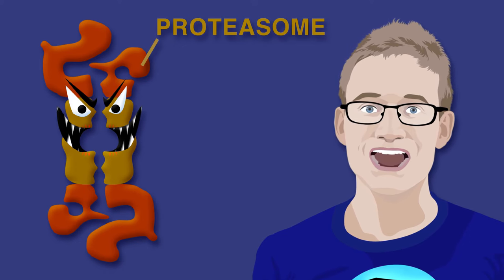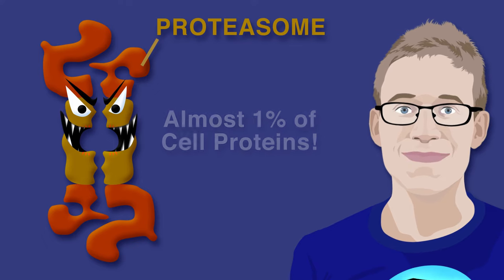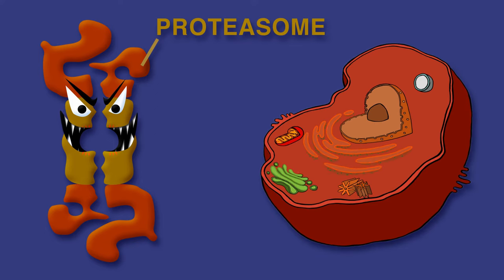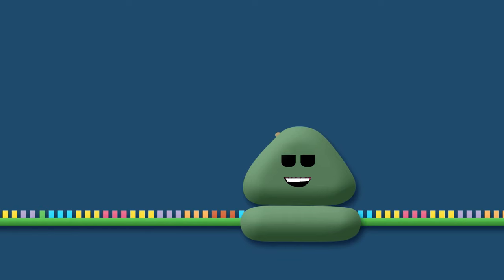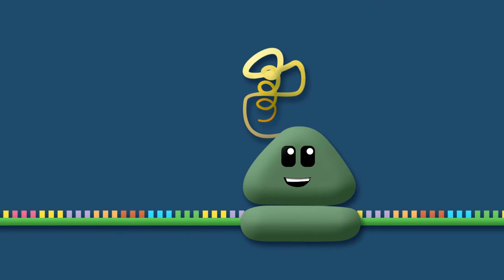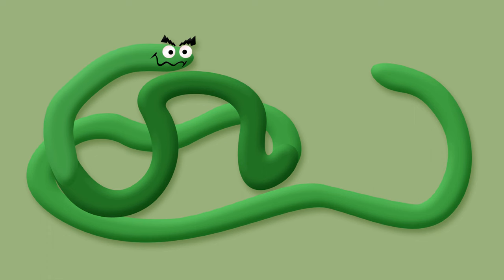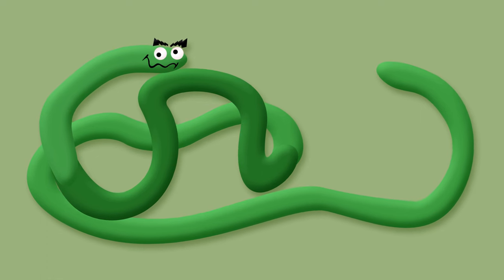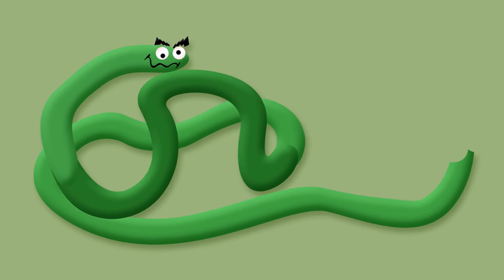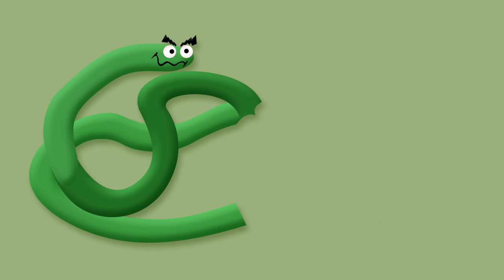Proteasomes are so important that they constitute almost 1% of cell proteins. They are dispersed throughout the nucleus and cytosol. If a protein folds correctly and quickly, then none, or only a small bit of it, gets degraded. A slowly folding protein is at risk for a longer time, and more of it might get destroyed before the remaining amino acids attain the correctly folded state.